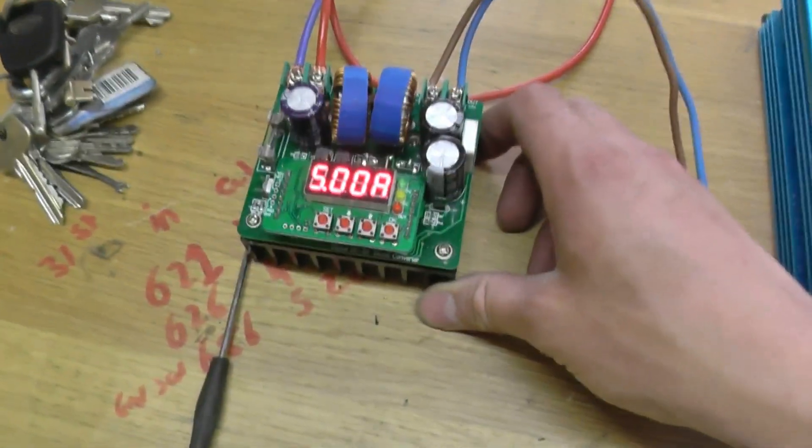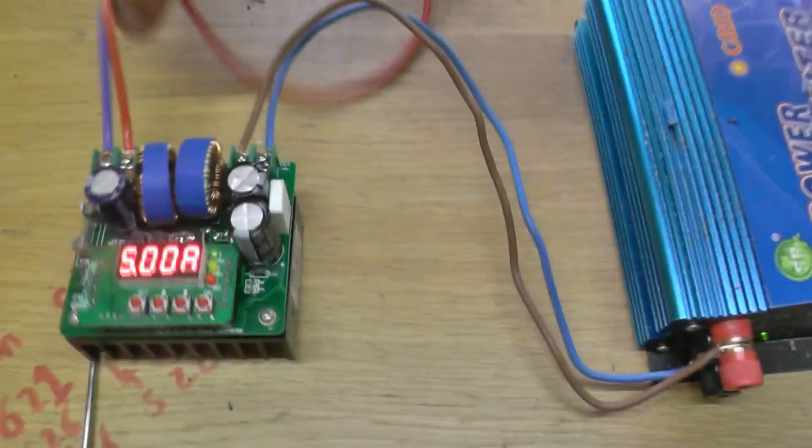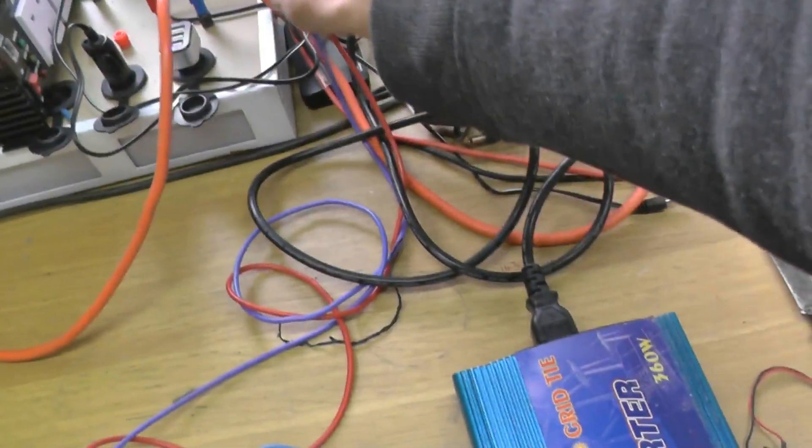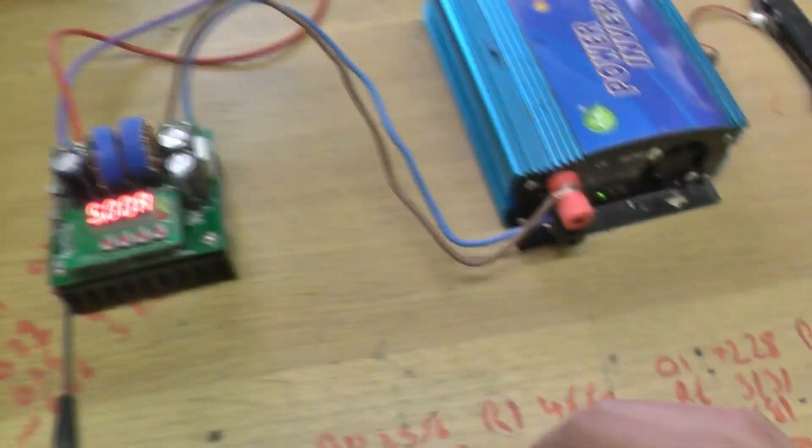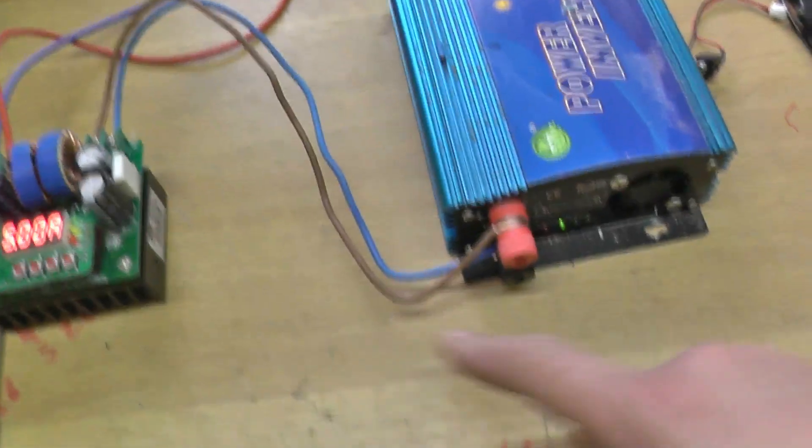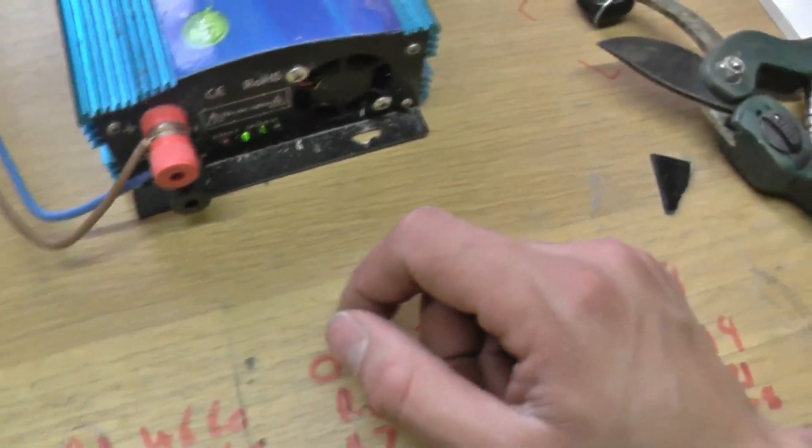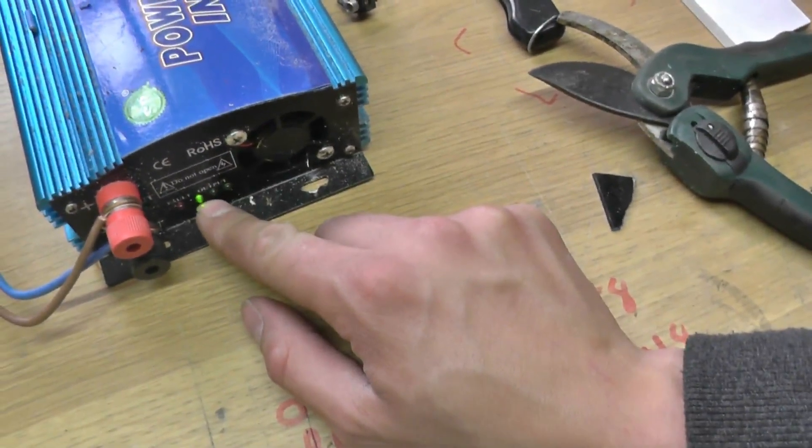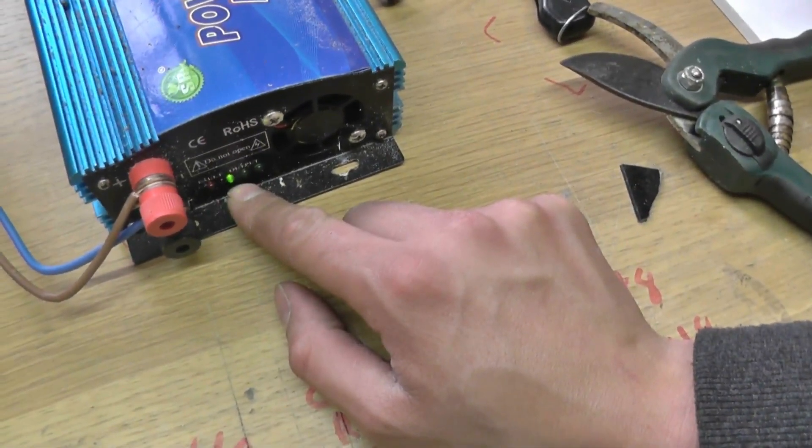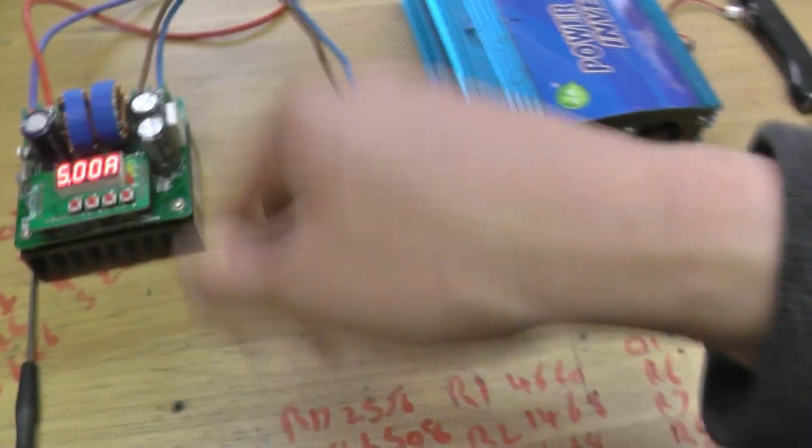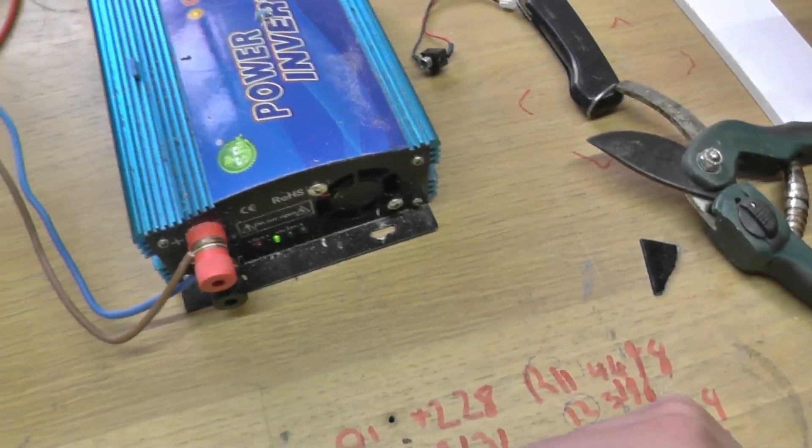So anyway, I thought what if I try to drive a grid tie inverter. So what I've basically done is I've got two leads going into my power supply over there. And then on the output we've got some solid 2.5 to 1.5 singles going to the grid tie. And we're just on green. It's not actually doing anything.